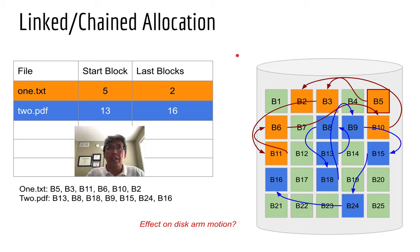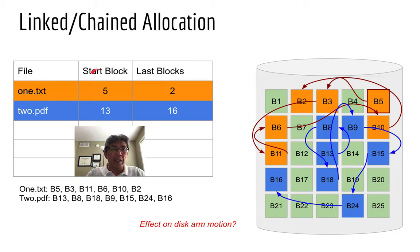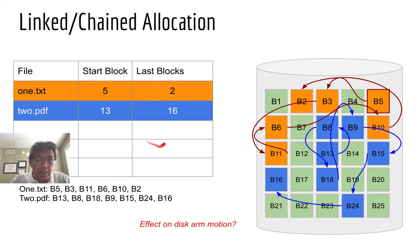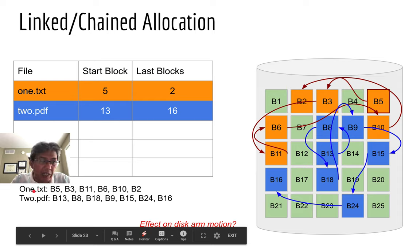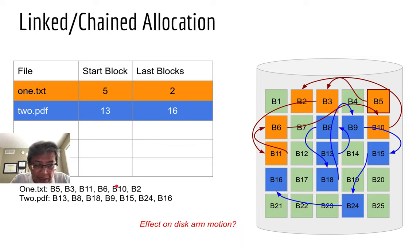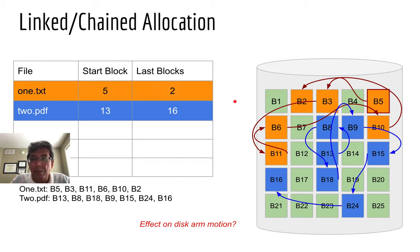Remember from your data structures course that a linked list has two unique pointers: the head pointer pointing to the first element, and the tail pointer pointing to the last element. The same technique is used in linked or chain file allocation. In your directory entry, you will see the file name, the address of the first block, and the address of the last block. For example, one.txt begins with block 5, followed by block 3, block 11, block 6, block 10, and block 2. So the directory entry stores the first block and the last block of your file.